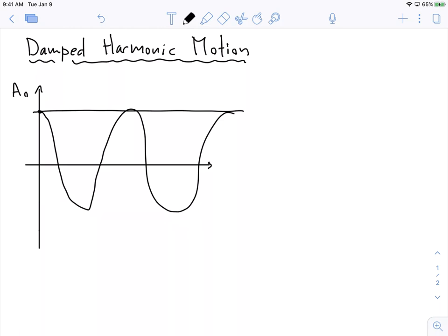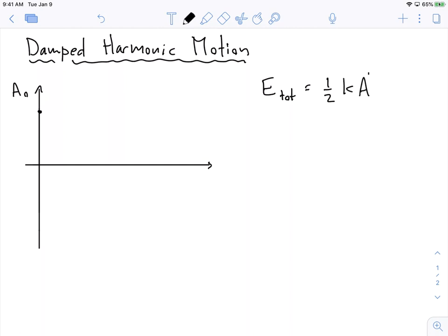Which means that if the amplitude stays constant, the energy stays constant. So what we know is that the total energy in the system is equal to 1/2 k times the amplitude squared of the oscillation.